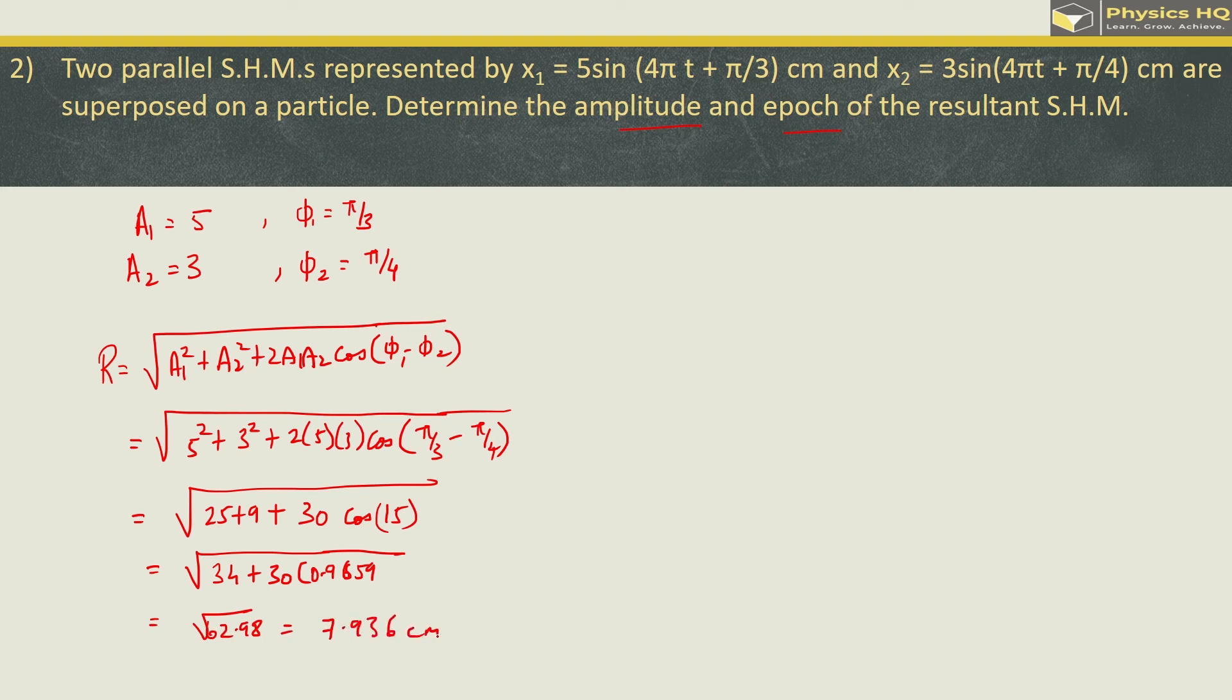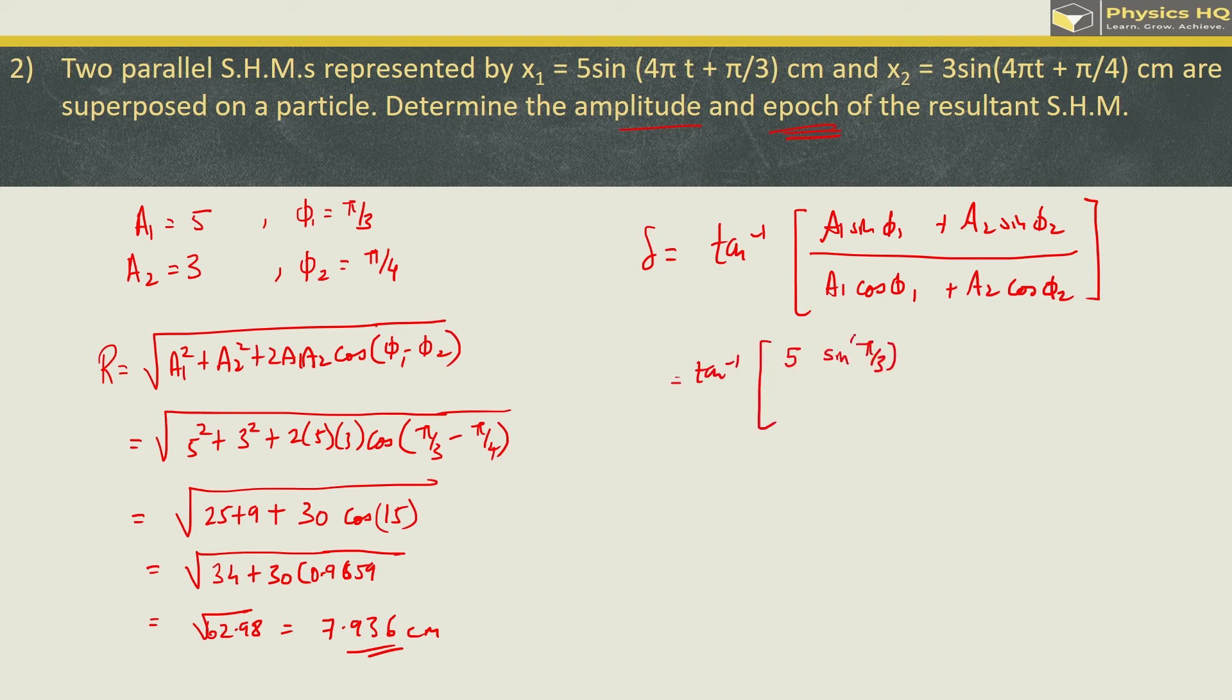So cos of 15 you will get this as 34 plus 30 into 0.9659 and when we solve this we will have root of 62.98 which will be 7.936 cm. Now to find the epoch the formula is tan inverse a1 sin phi1 plus a2 sin phi2 divided by a1 cos of phi1 plus a2 cos of phi2.